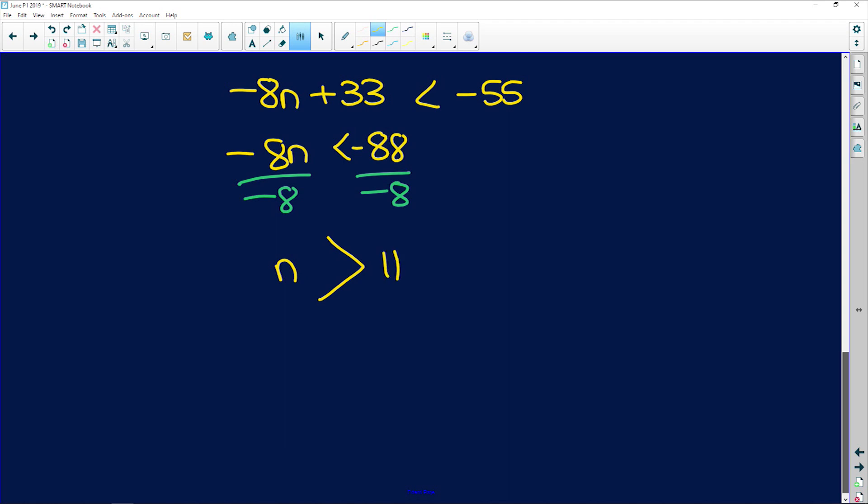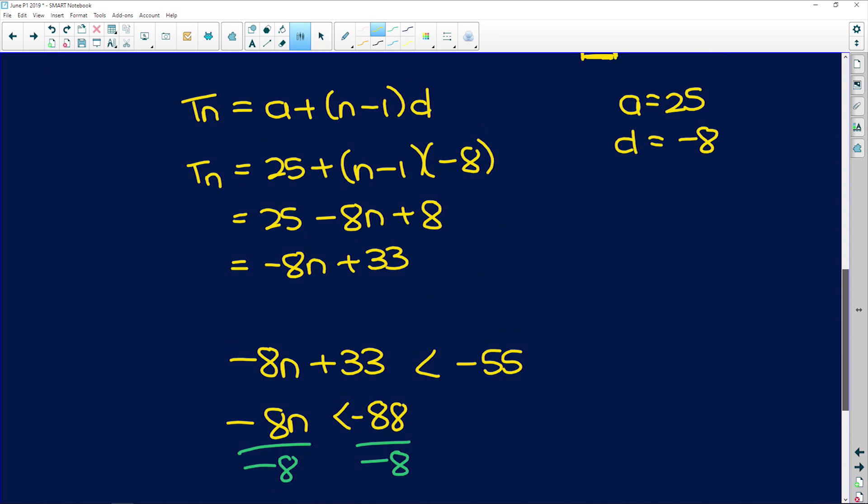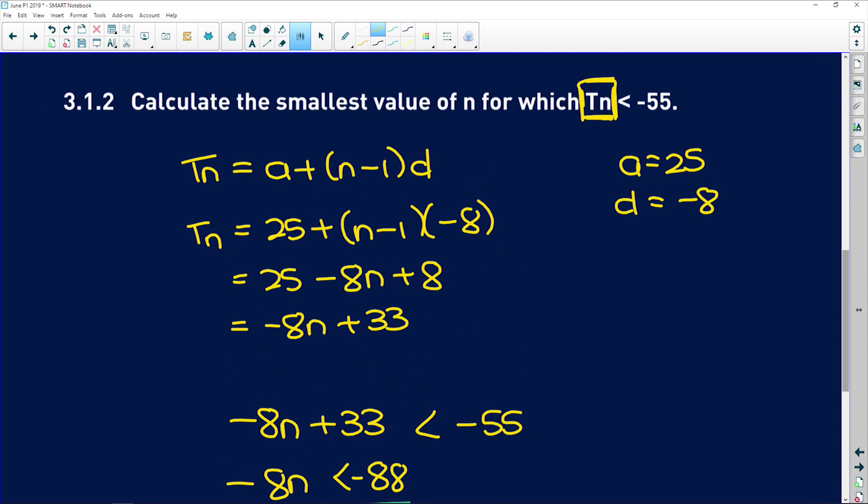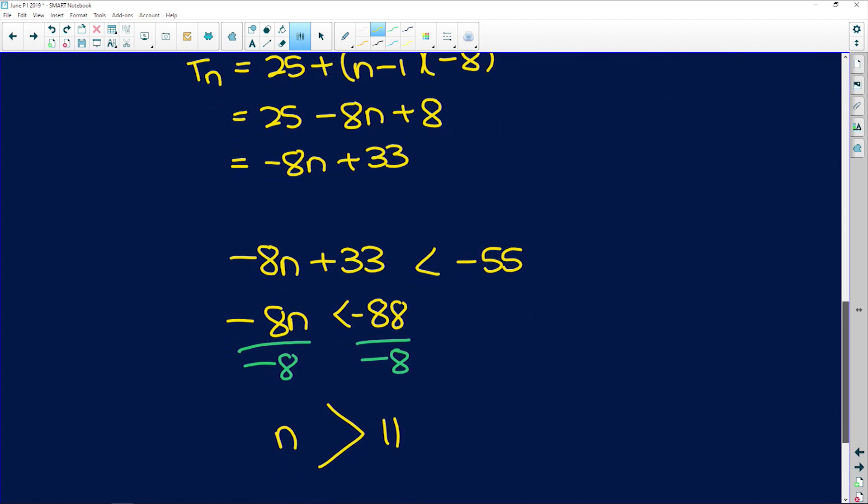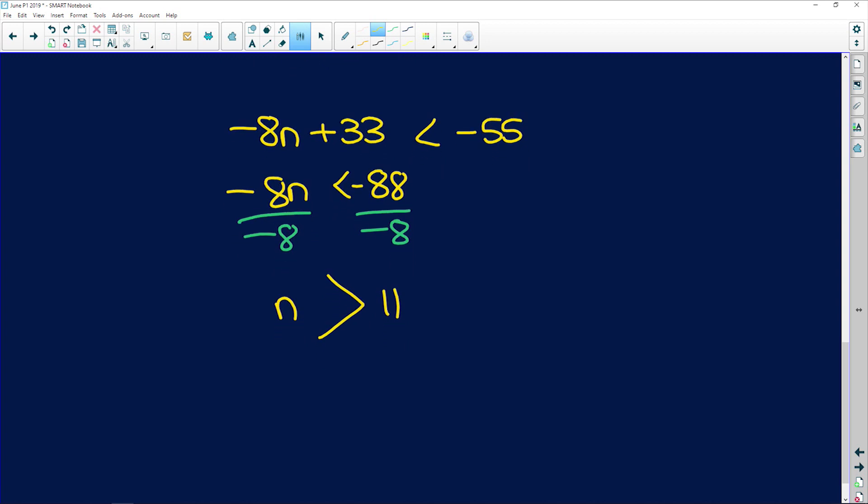So at n equals 11, the term is going to equal negative 55. Because if we substitute 11 for n, we're going to get negative 55. So the smallest value where tn is less than negative 55 is when n is greater than 11. So n needs to be greater than 11 for that inequality to be sound. That is question 3.1.